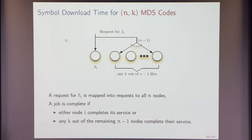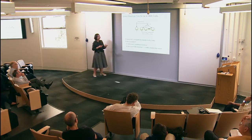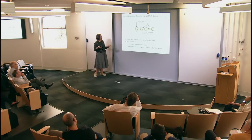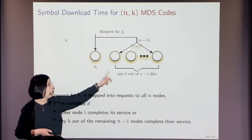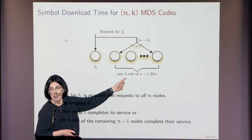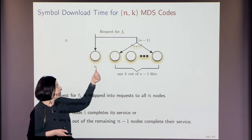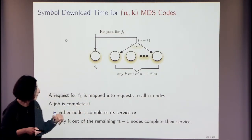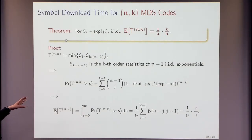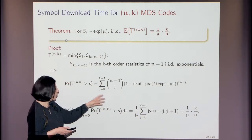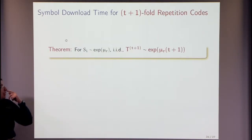What about MDS codes? For an (N, K) MDS code, I send requests to all N nodes and declare success as soon as any K respond — whichever comes first. The analysis — which starts complex but reduces through beta functions — gives a clean result: the normalized mean download time is simply K/N.